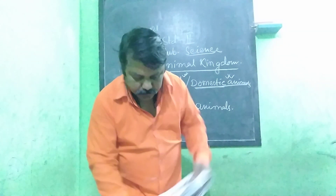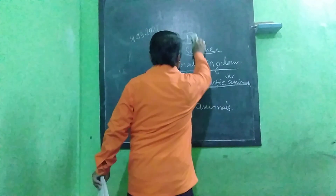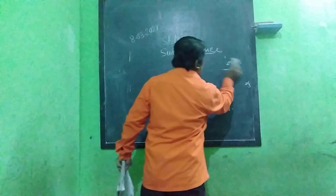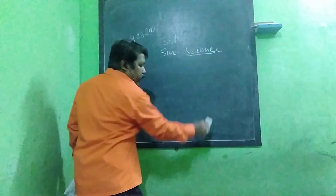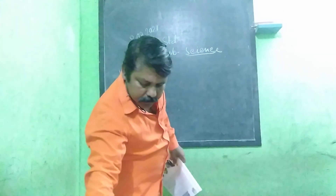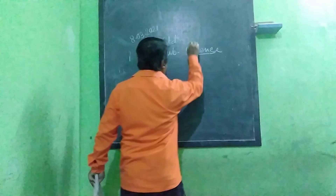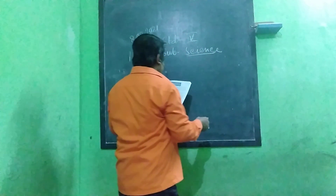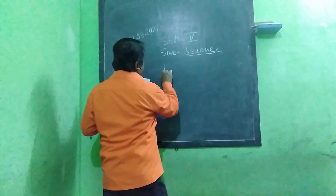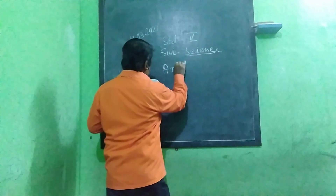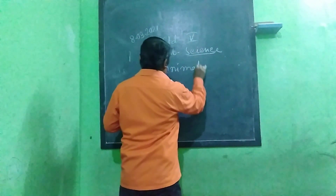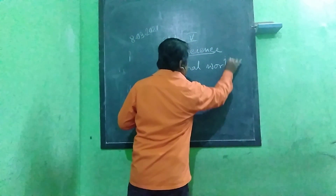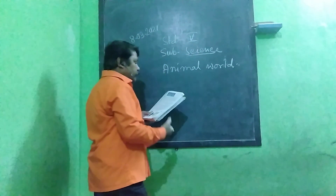Namaskar. This is Plus 5 Science. I will read this chapter very carefully; if you read at your home, the chapter is Animals 1. It is a half chapter.